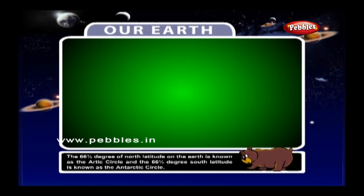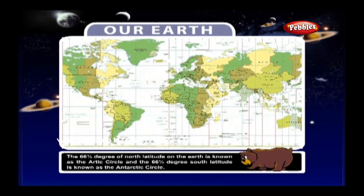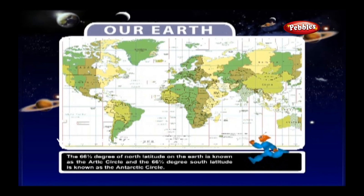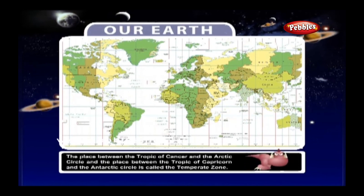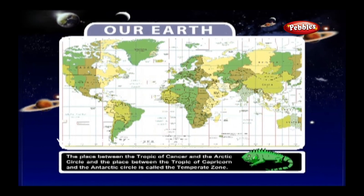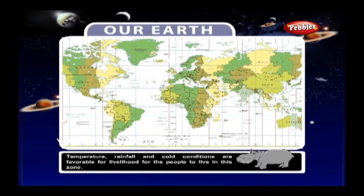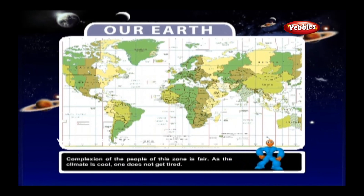The Temperate Zone: The 66.5 degree north latitude is known as the Arctic Circle, and the 66.5 degree south latitude is known as the Antarctic Circle. The place between the Tropic of Cancer and the Arctic Circle, and between the Tropic of Capricorn and Antarctic Circle, is called the Temperate Zone. Temperature, rainfall and cold conditions are favourable for livelihood here. The complexion of people in this zone is fair, and as the climate is cool, one does not get tired.